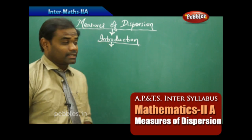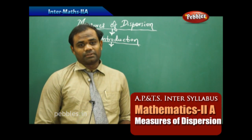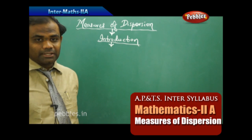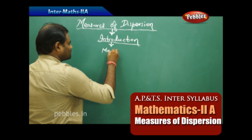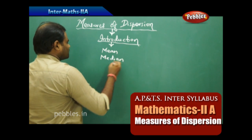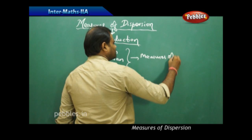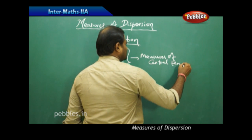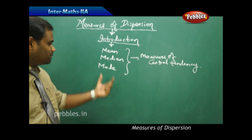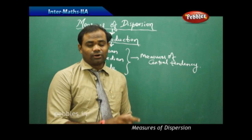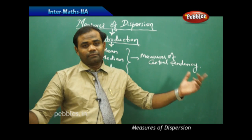The topic we are going to discuss as a new chapter is measures of dispersion. In statistics we have seen the measures of central tendency — that is mean, median, and mode — which describe the central tendency or the behavior of the data, giving us how we can observe the center of the data out of all the given data points.